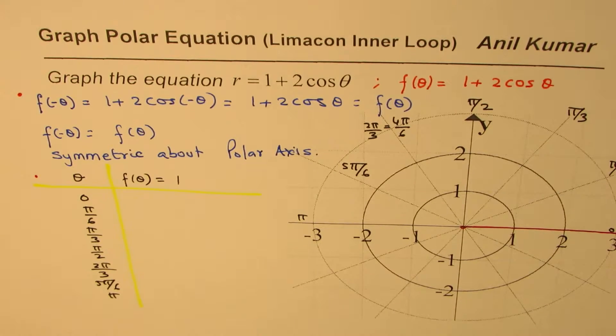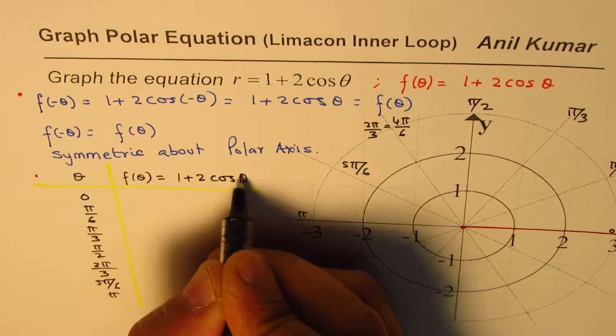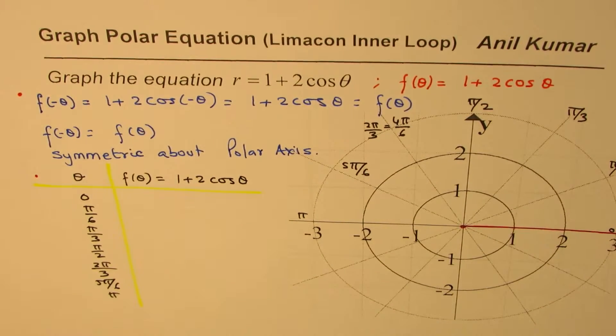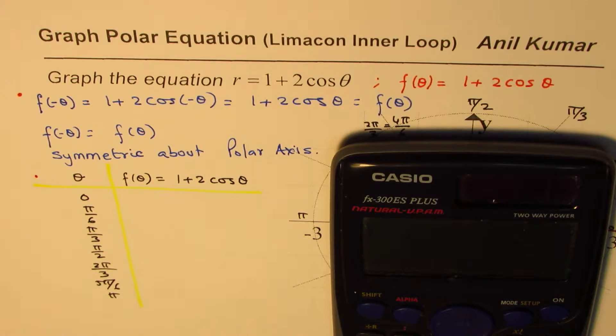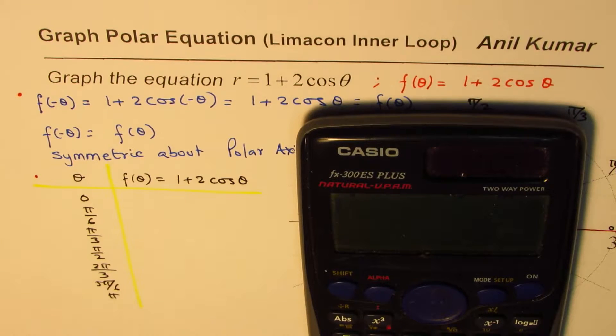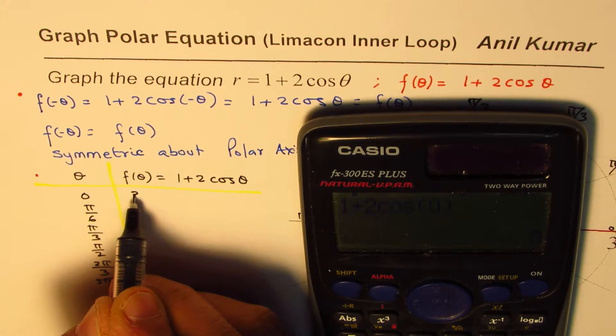So we will use the calculator to be fast on this. At times, you are faster without a calculator. Since we know we land up with some decimal values, we should use the calculator. So the first one here is 1 plus 2 times cos of 0. So cos of 0 is 1, so that should give me 3 as my answer. So we get 3 here.